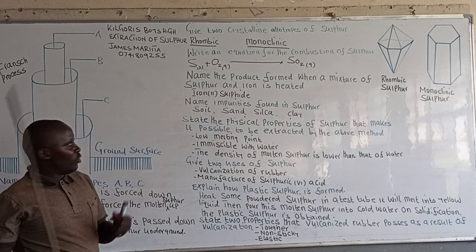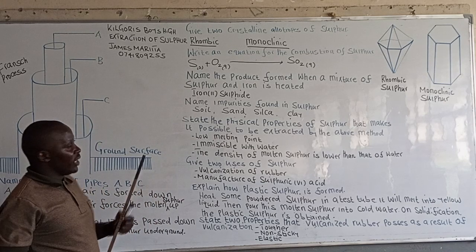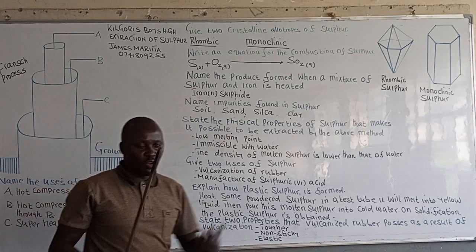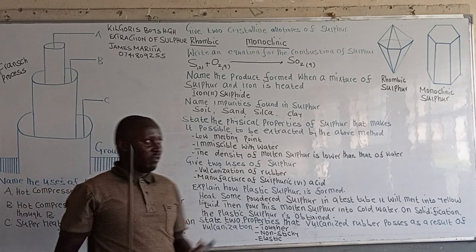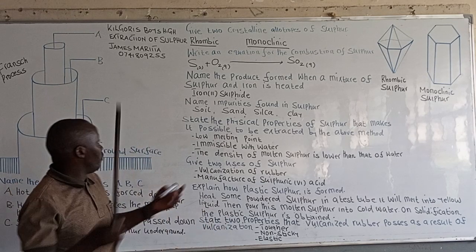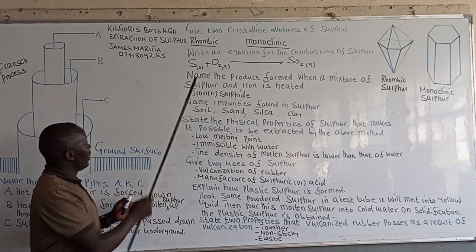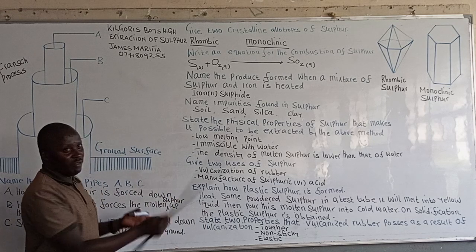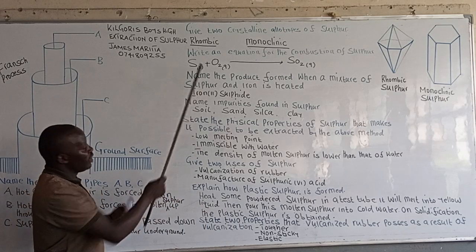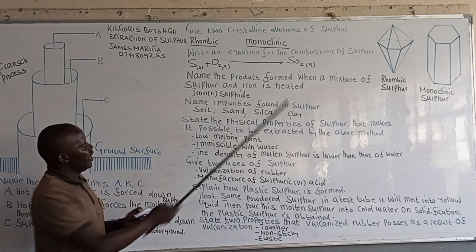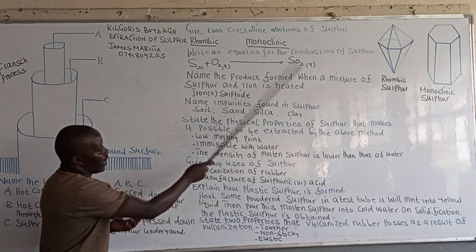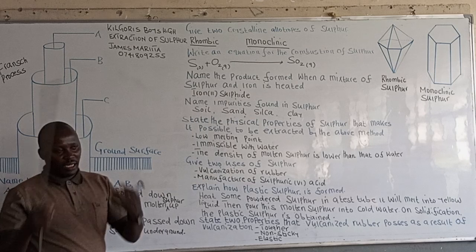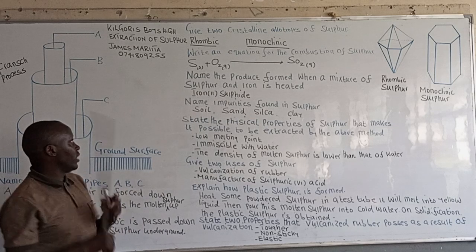Write an equation for the combustion of sulfur. For combustion of sulfur, we normally have sulfur combined with oxygen to give sulfur dioxide.